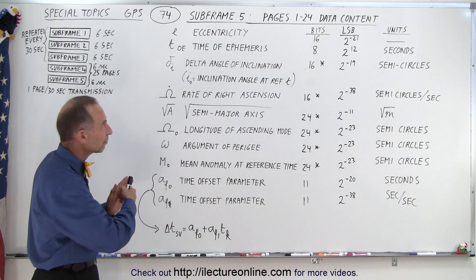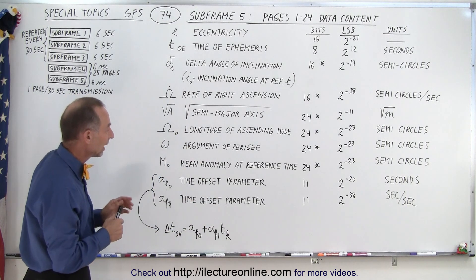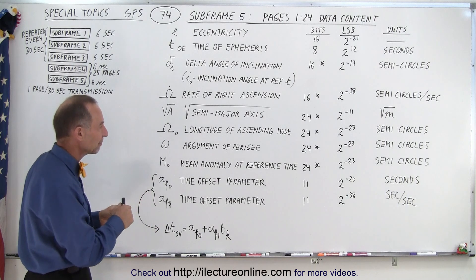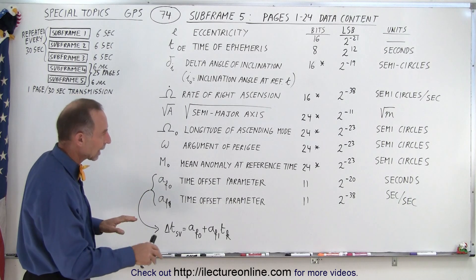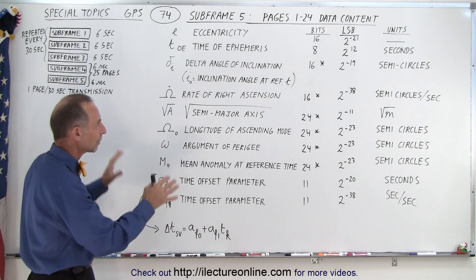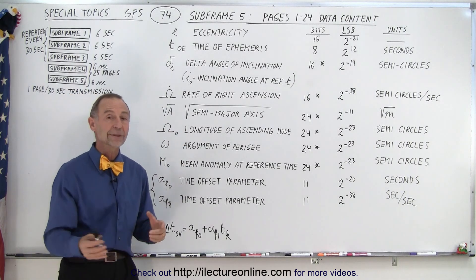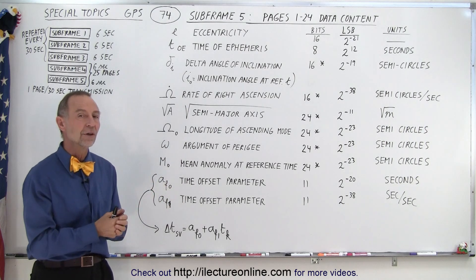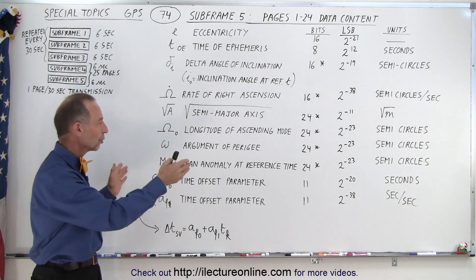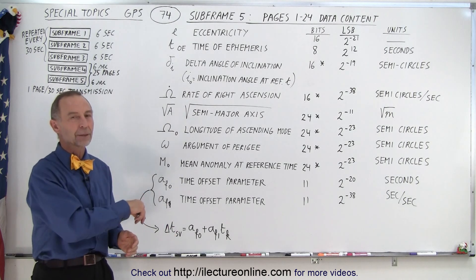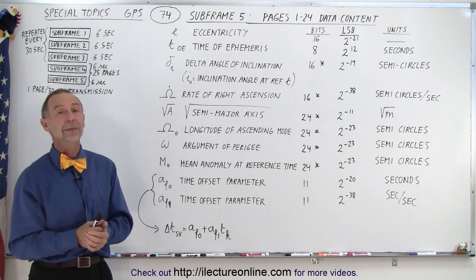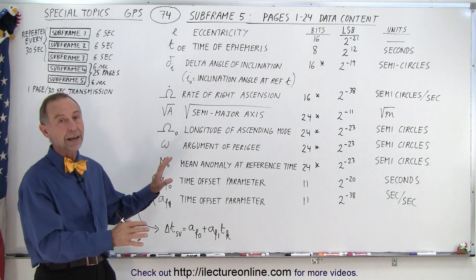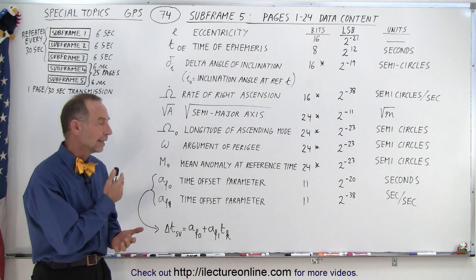So this is the data contained within each of the 24 pages of subframe 5, and this is also the structure we'll find in those eight pages in subframe 4, for a total of 32 satellites. We'll talk about the details of how these are used later on, but we simply want to get a feel for what's contained in them. Next, we'll put up the structure of the subframes and the pages themselves, so you can see how all the data is distributed throughout the various words of each subframe. Here we just have a list of what's contained in the almanac data — just for the orbital parameters of each of the 32 satellites that can be contained within the data set.